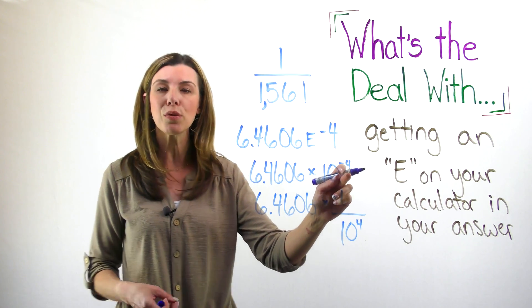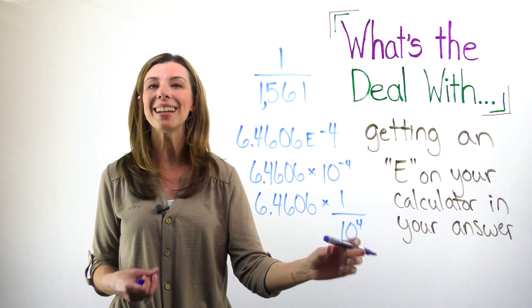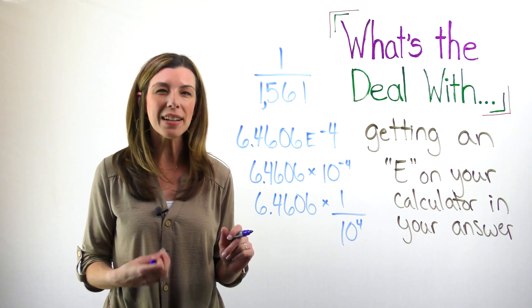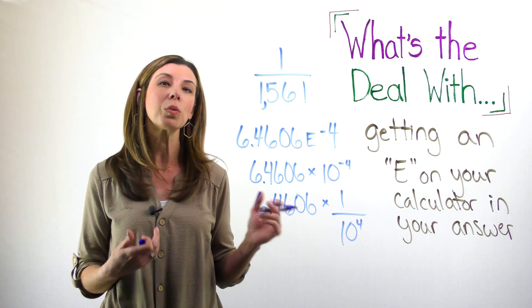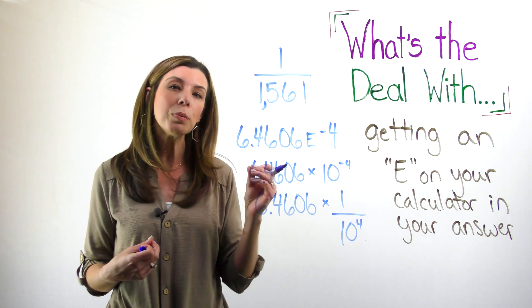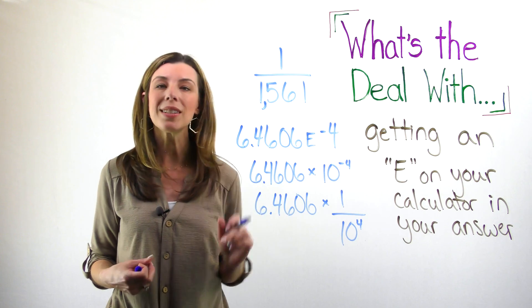This is equivalent to saying 6.4606 times 1 over 10 to the 4th power. Remember, we can make this 4 a positive by putting it in the denominator. So think of it as I'm dividing by 10,000. Really what I'm doing is I'm going to move the decimal four places to the left.